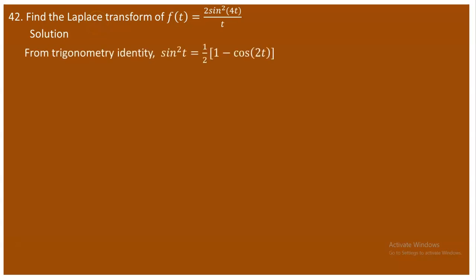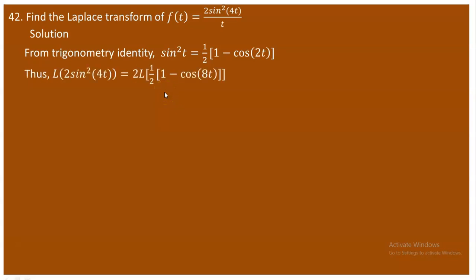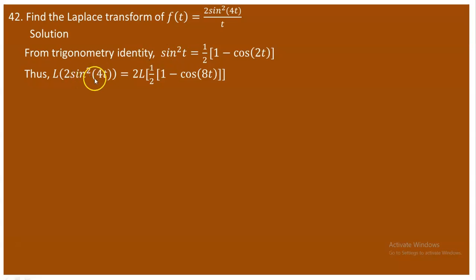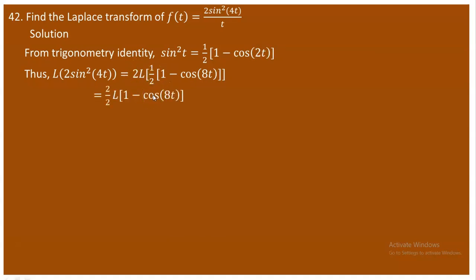Before proceeding, recall the trigonometric identity: sin²(t) = ½(1 - cos 2t). So the Laplace of 2sin²(4t) gives us 2 out front by linearity, and sin²(4t) becomes ½(1 - cos 8t), because substituting 4t in place of t gives 2·(4t) = 8t. The factor of 2 and ½ cancel.